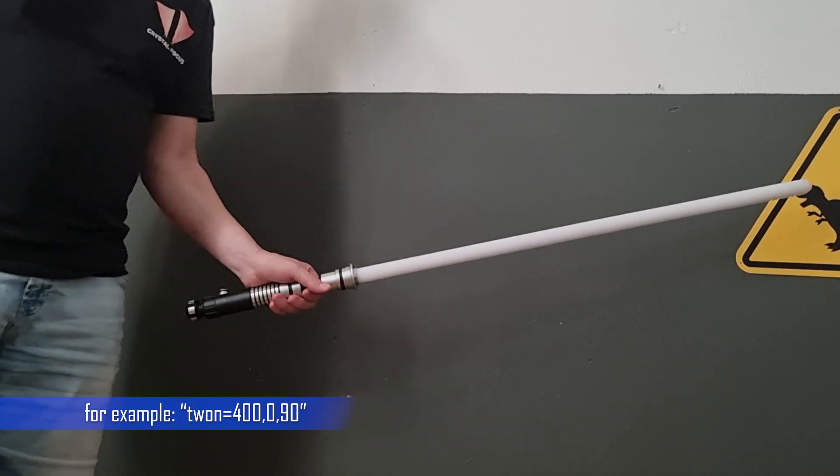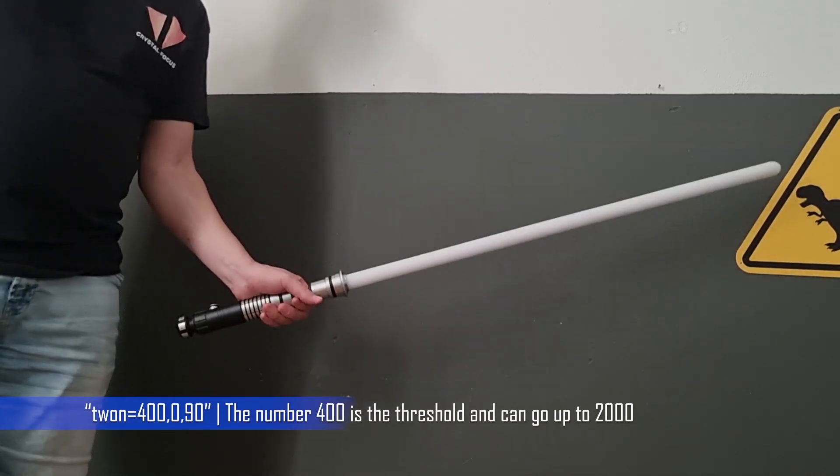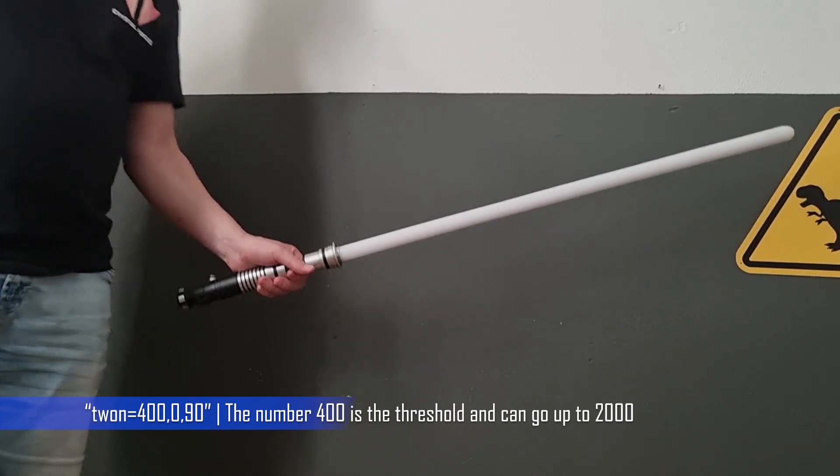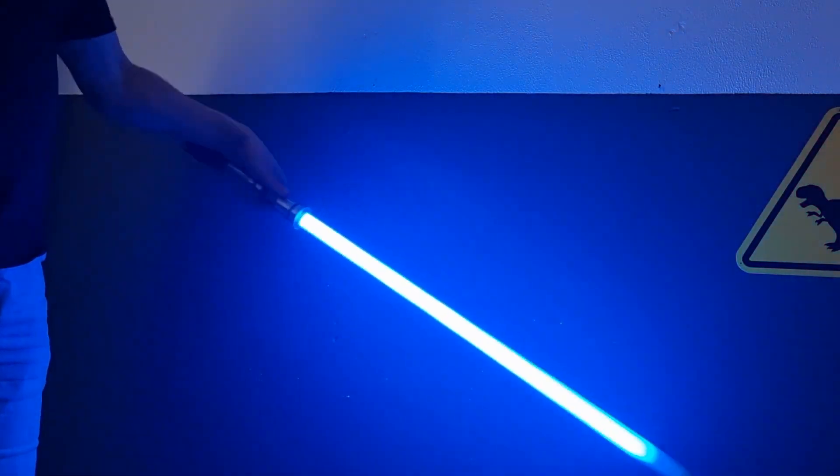The first number is a threshold, so how hard do I need to twist the saber to trigger the action, to trigger the power on or to trigger the power off.